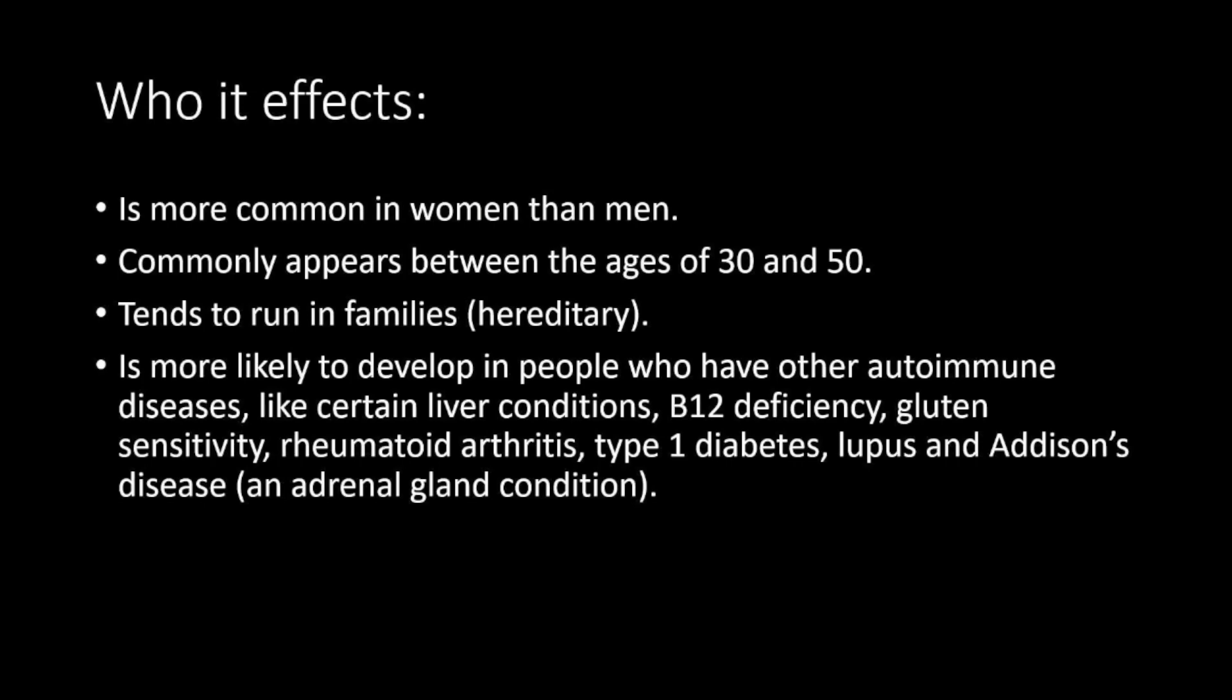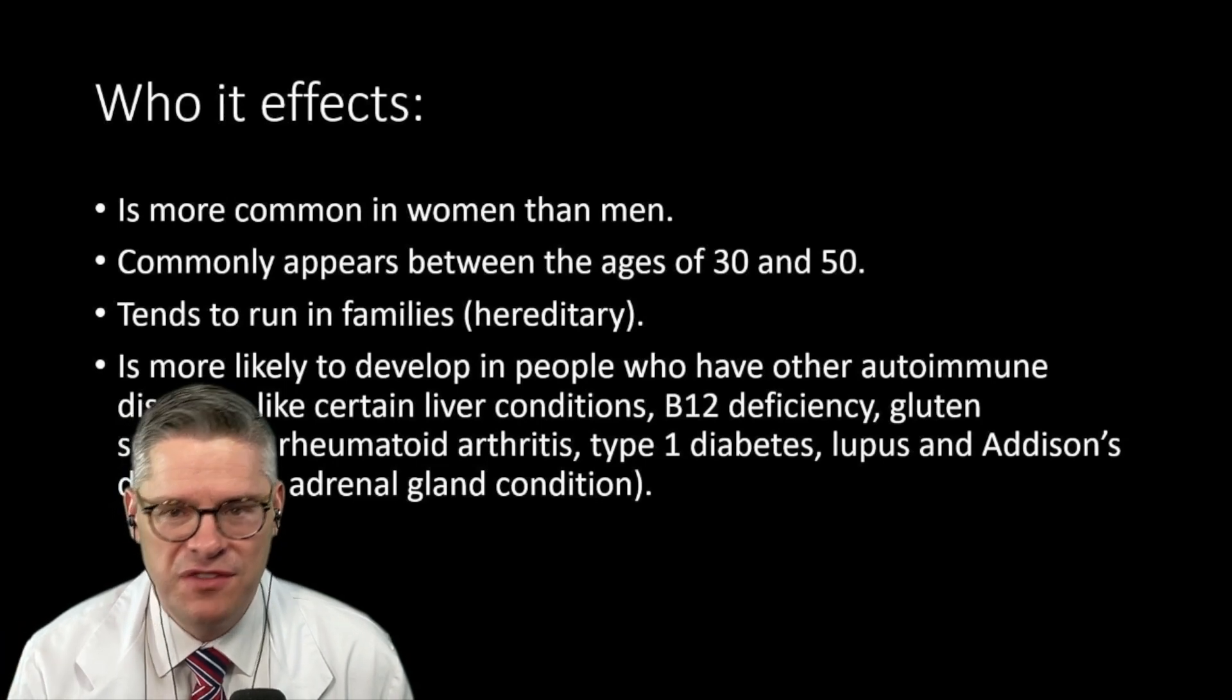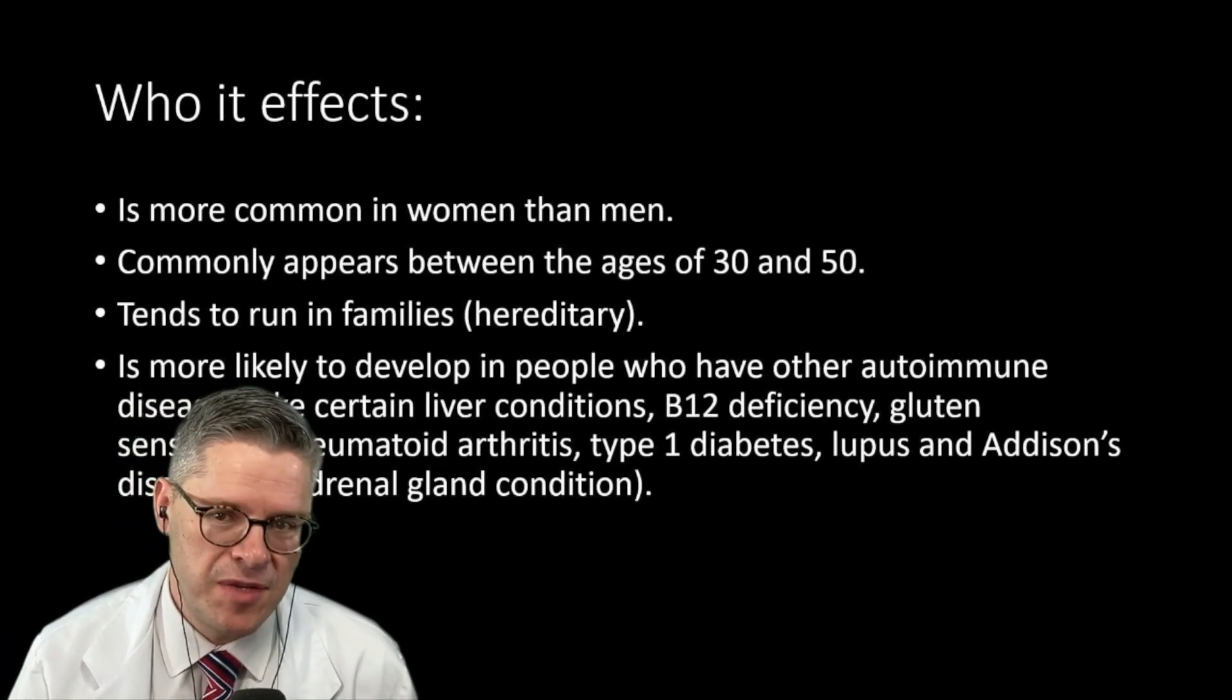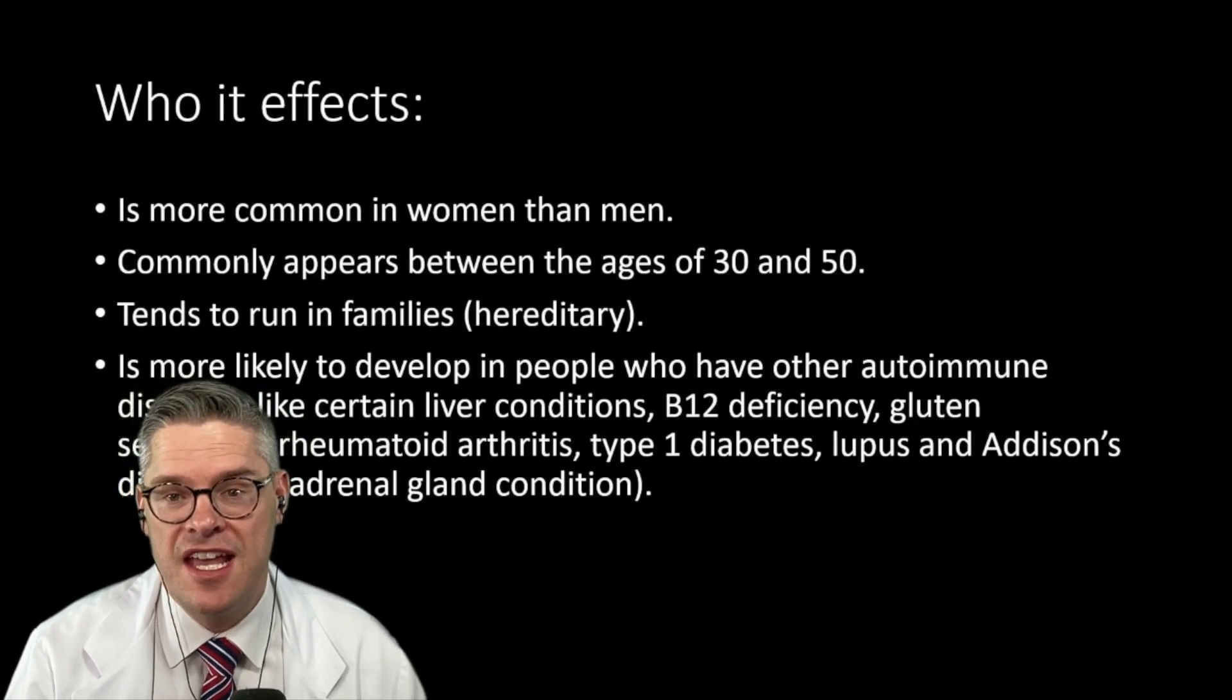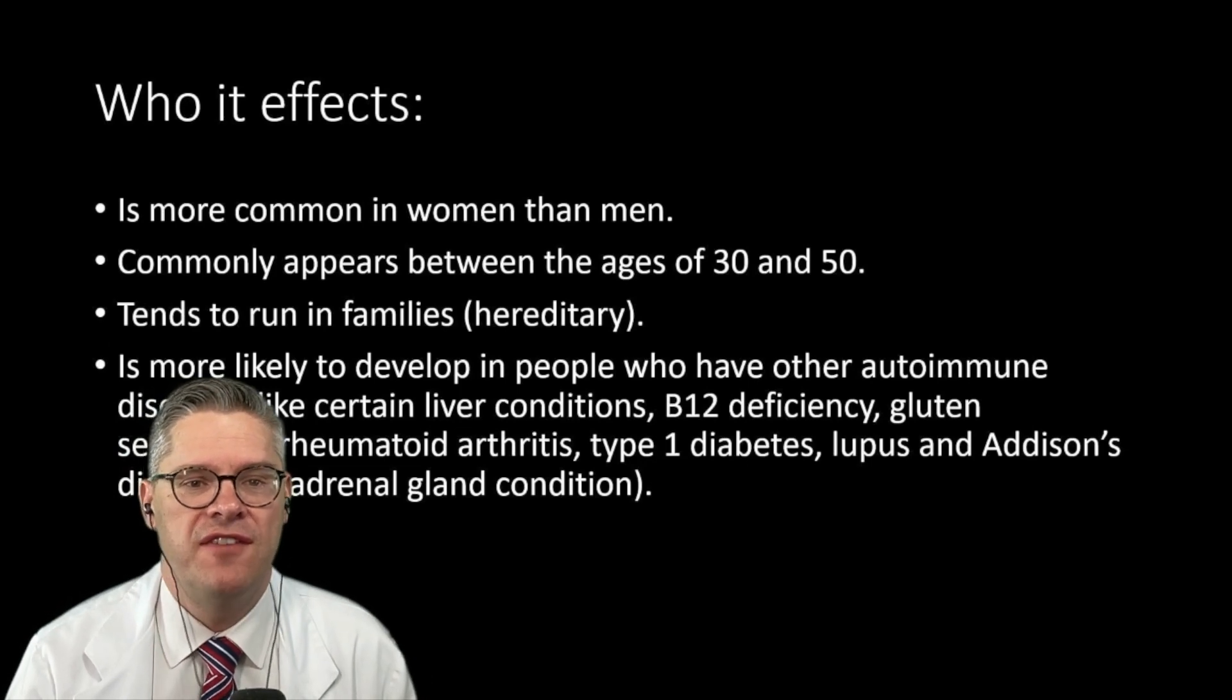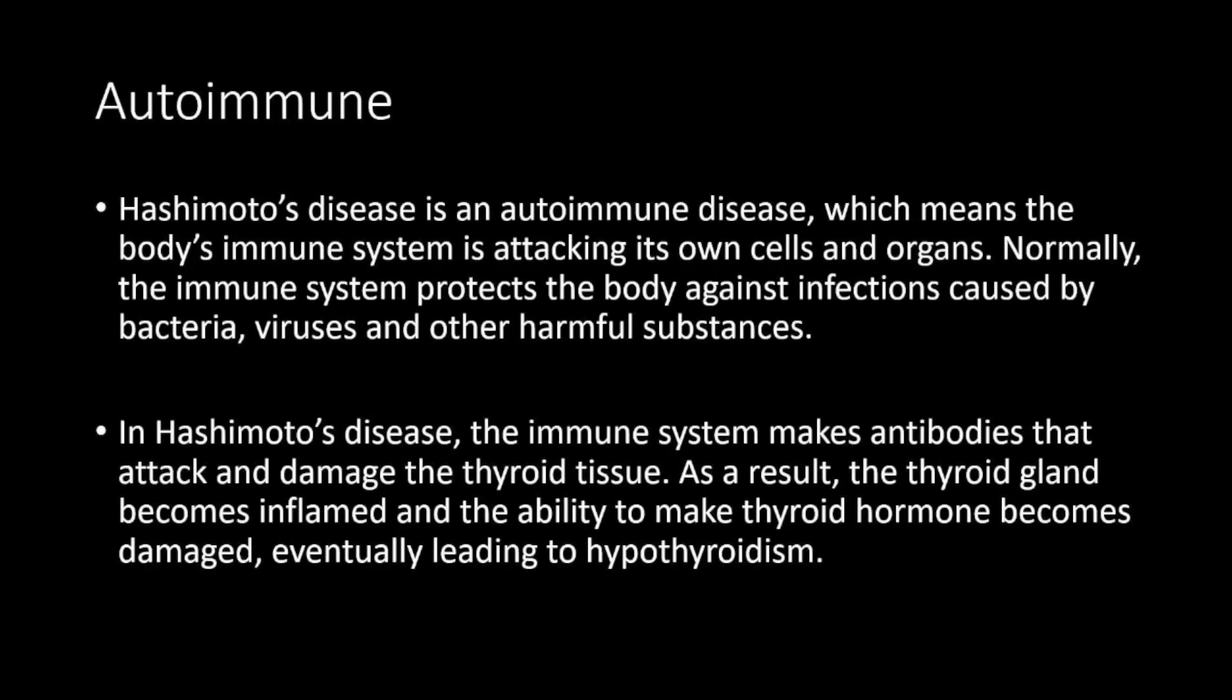Hashimoto's is more common in women than men, usually between 30 and 50. It does have a tendency to run in families, although it's not hereditary. When people have autoimmune disorders like Hashimoto's, it's not unlikely to have liver conditions, B12 deficiency, diabetes, lupus, Addison's disease, ankylosing spondylitis. There's so many different things that can happen when you have a confused immune system. It's about 5% of people.